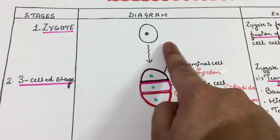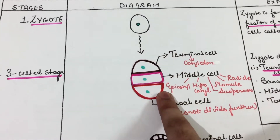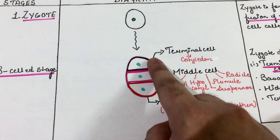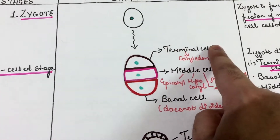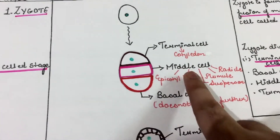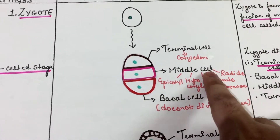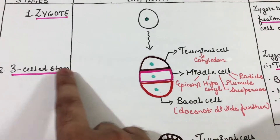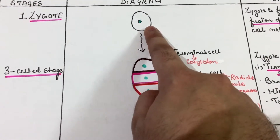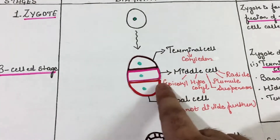After the zygote is formed, it divides into three cells: the terminal cell, the basal cell, and the middle cell. This is called the three-cell stage, as the zygote has divided into three cells.